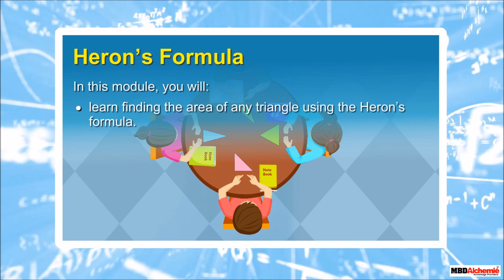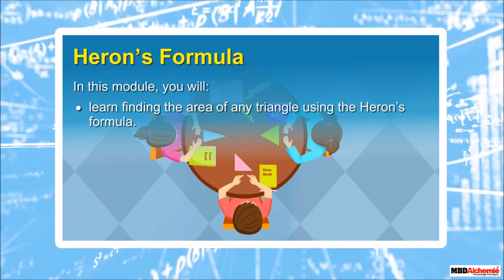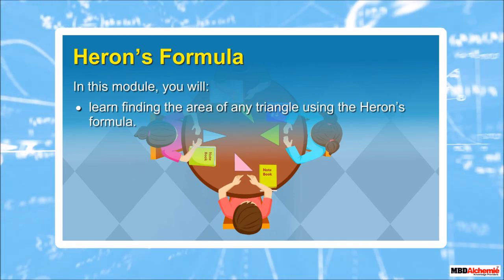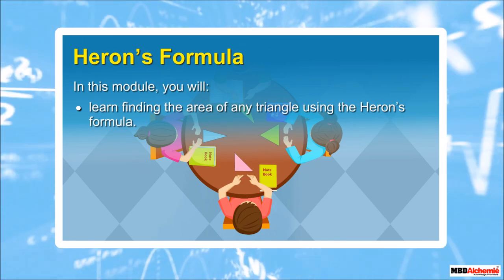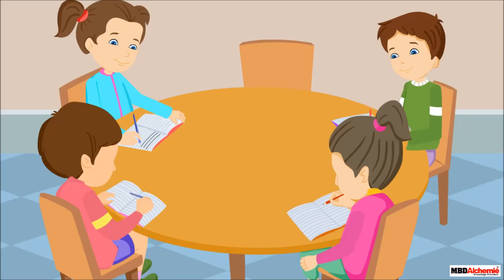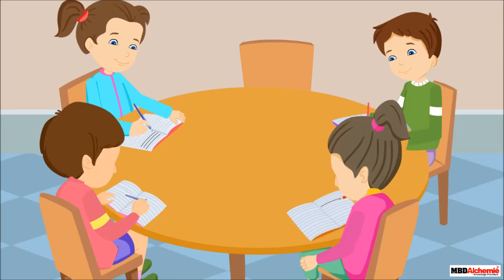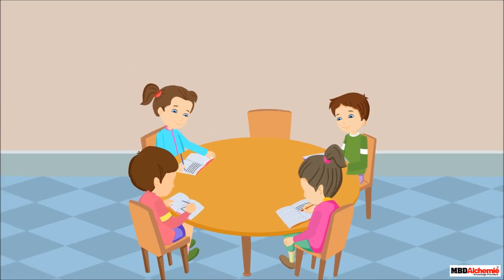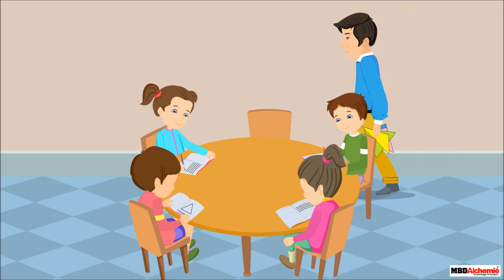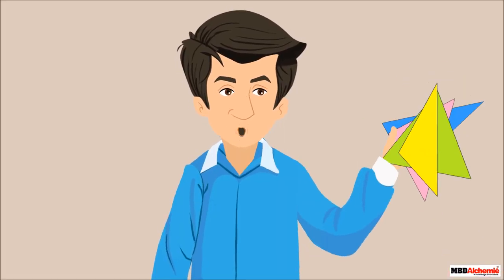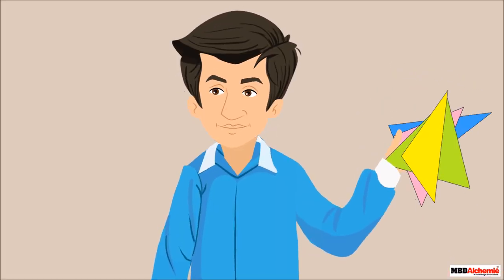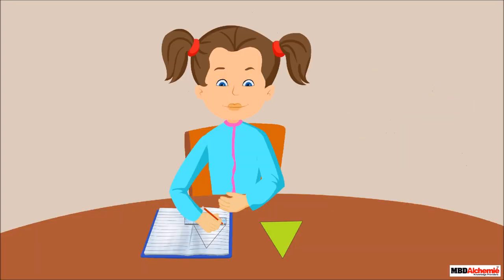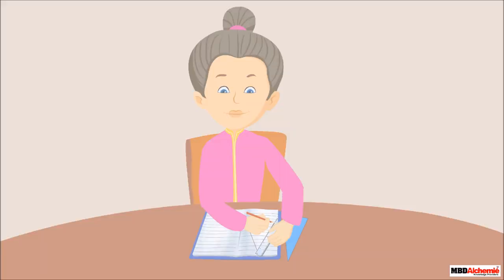In this module you will learn to find the area of any triangle using Heron's formula. Sid, Neil, Rhea, and Sophie are studying in a group at Neil's home. Neil's father gives triangular cutouts to each child and asks them to find the area of the triangles. All the children start finding the area.